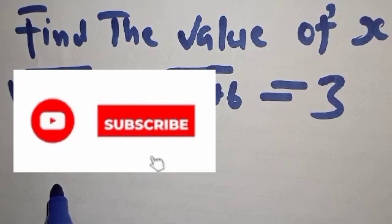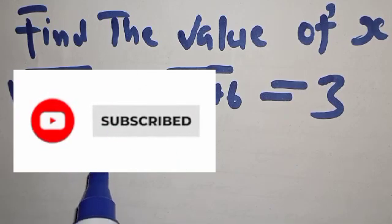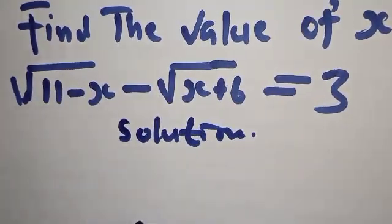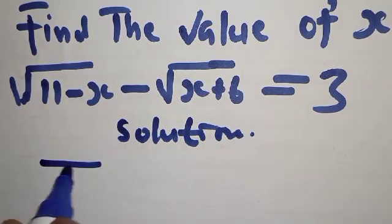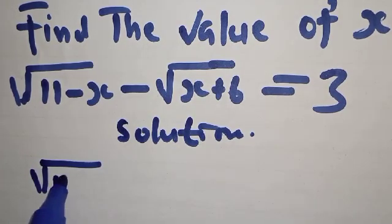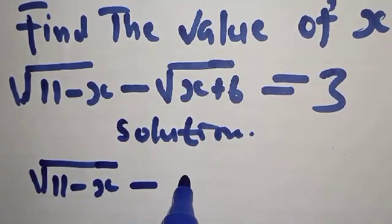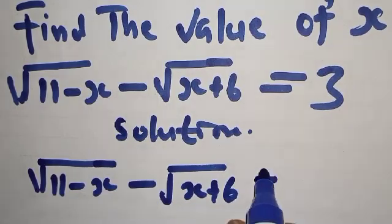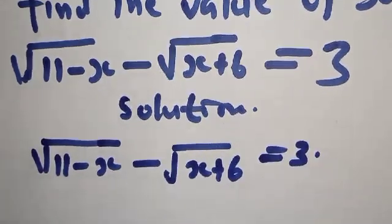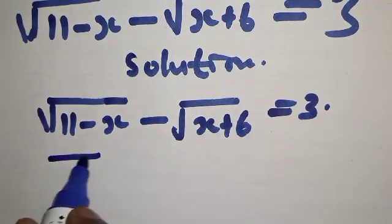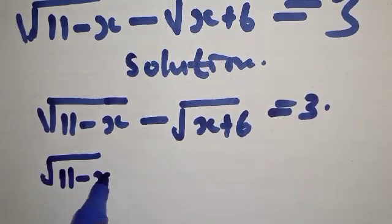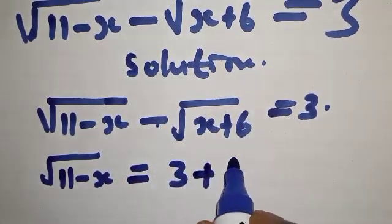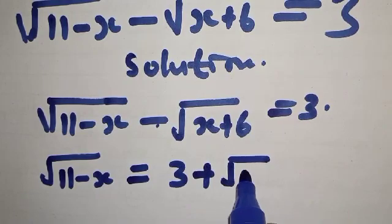Please don't forget to like, share, comment and subscribe. The question says: square root of 11 minus x, minus square root of x plus 6, is equal to 3. This implies that square root of 11 minus x is equal to 3 plus square root of x plus 6, moving the second radical to the other side.